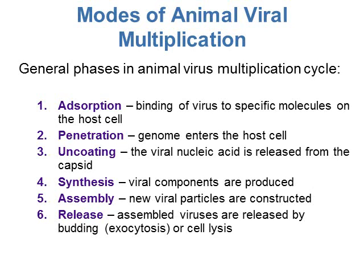After absorption, you have penetration, where the genome — whether DNA or RNA — gets into the host cell. Then the third step is uncoating, where the nucleic acid is released from the protein capsid. Step four is synthesis, where the nucleic acid hijacks the cell to produce viral components. After that is step five, assembly, where they assemble the viral particles.